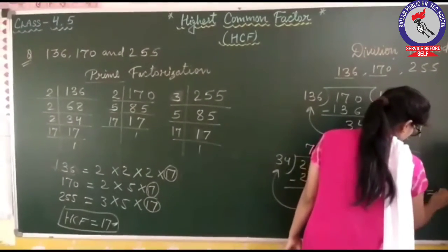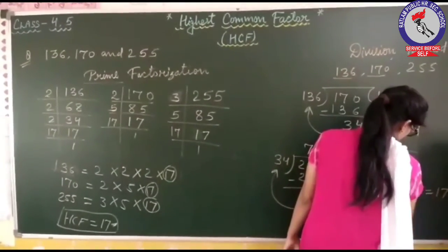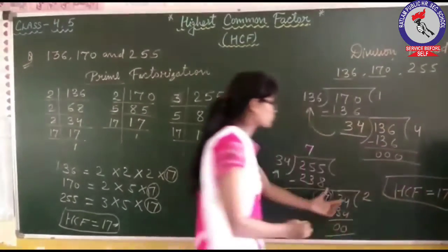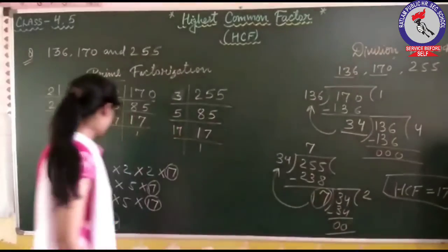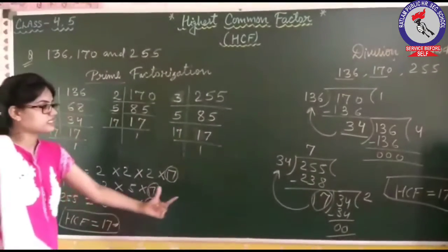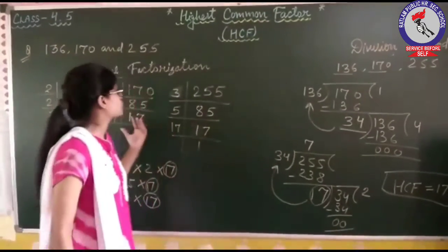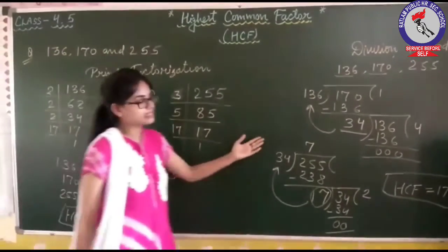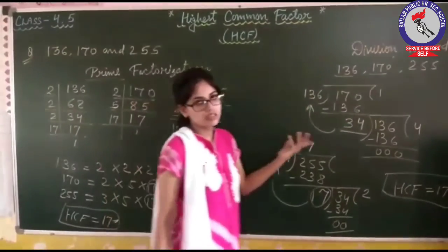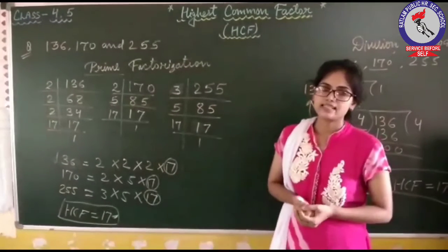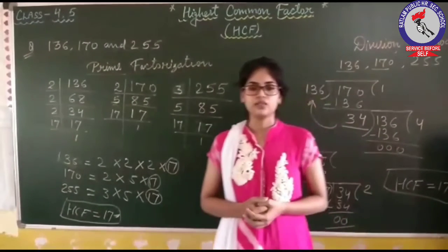Our HCF is 17. By both these methods — prime factorization and division method — our HCF is equal to 17. Both these methods are correct to find HCF. Thank you.